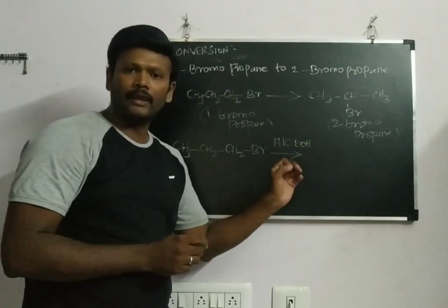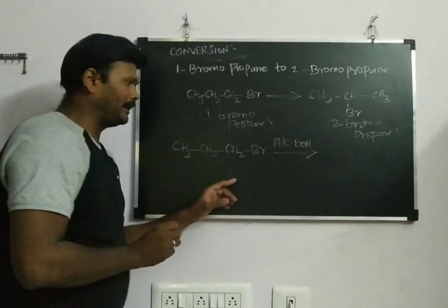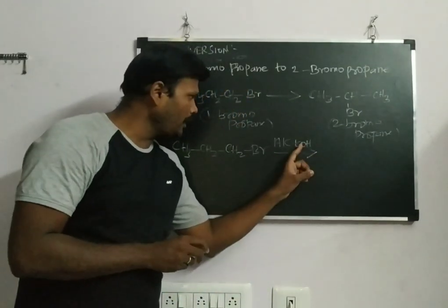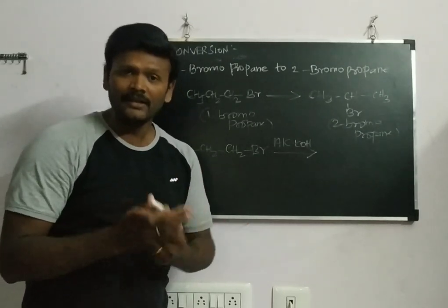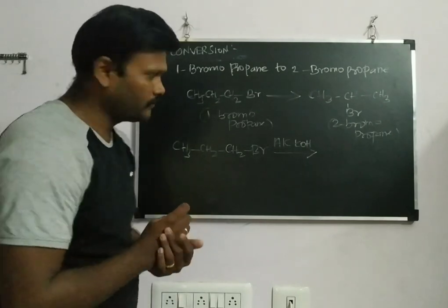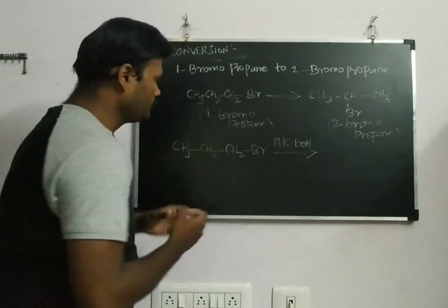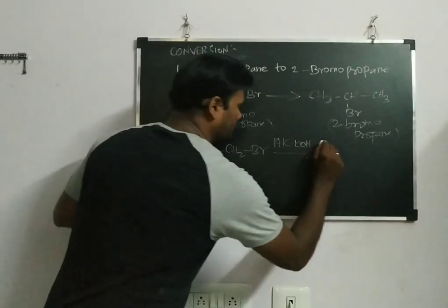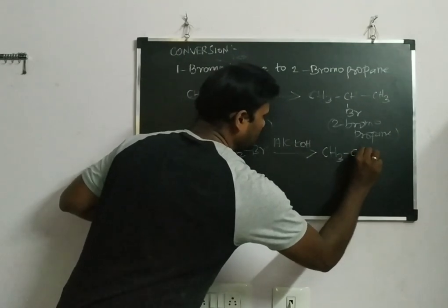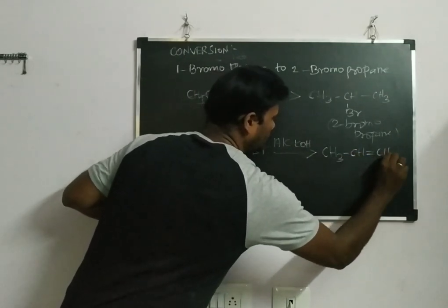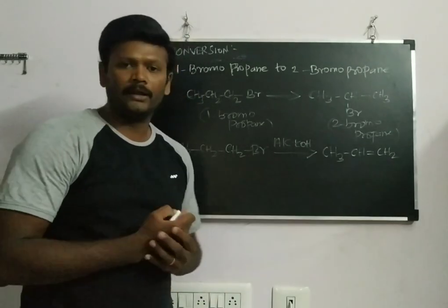If I put alcoholic KOH, that OH minus will not be acting as a strong nucleophile. It will be acting as a base, a strong base. It attacks only hydrogen on the beta carbon. It always attacks beta hydrogen. I will be getting a product like this: CH3-CH=CH2. I will be getting prop-1-ene. This is the product I am getting in my first step.